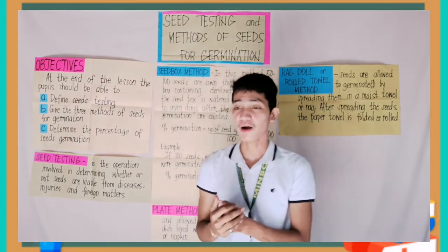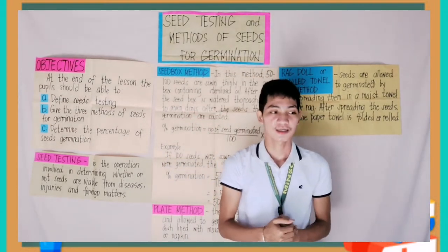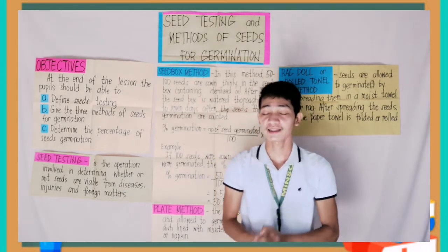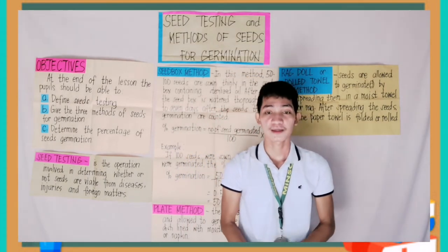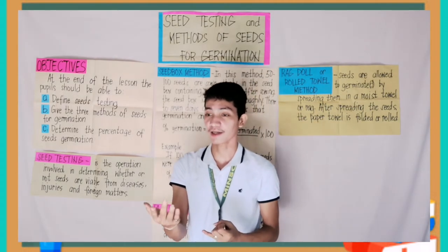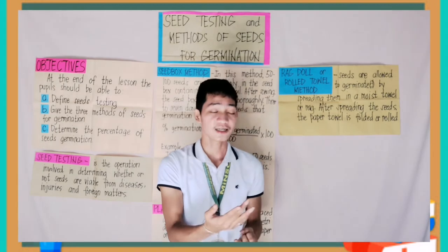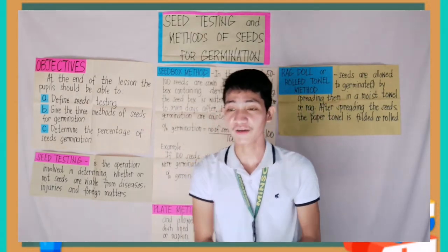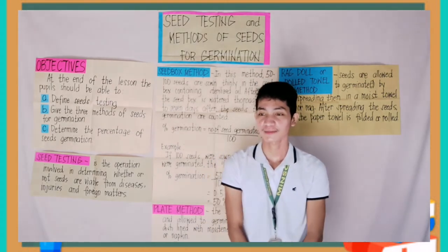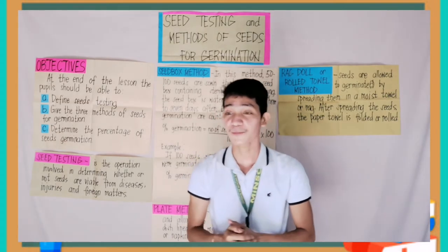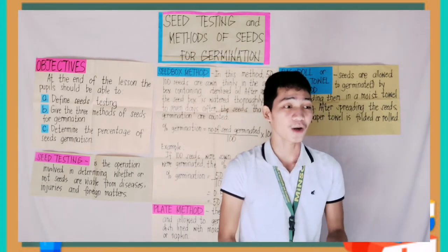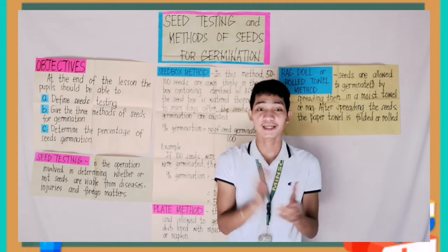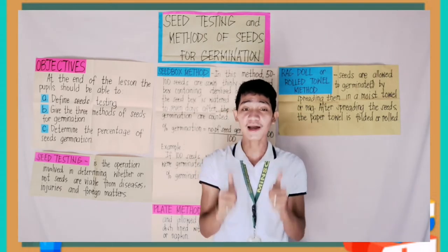Who can give the summary of our lesson? Yes, James — okay, that's right. The summary of our lesson is all about seed testing and the three methods of seed germination: seed box method, plate method, and ragdoll or rolled towel method, and determining the percentage of seed germination. In addition, it is important to select good quality seeds to attain quantity and quality harvest. Give James and Lloyd a very good clap!